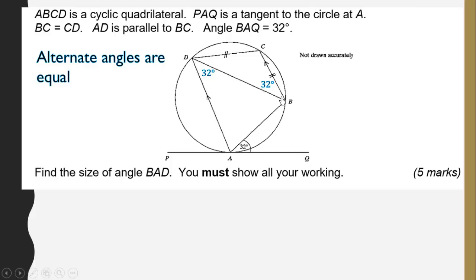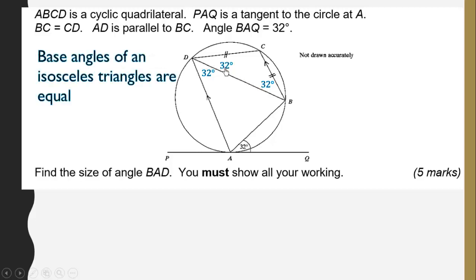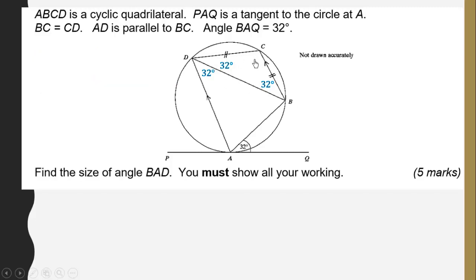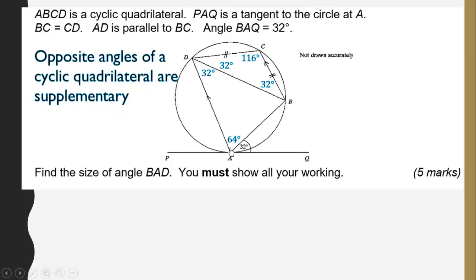This angle is also 32 degrees because this line is parallel to this line, making a Z-shape with the transversal. Z angles are alternate angles and are equal. Since this triangle has BC equal to CD, the base angles are equal, so both are 32 degrees. The third angle of triangle BDC is then 116 degrees. This angle and the opposite angle should give 180 degrees — opposite angles of a cyclic quadrilateral are supplementary.